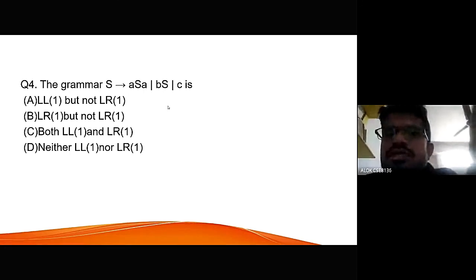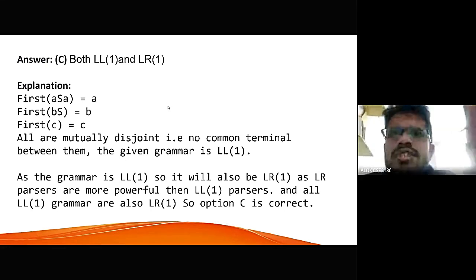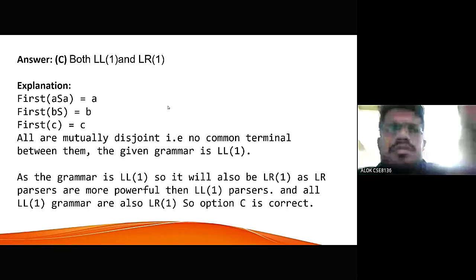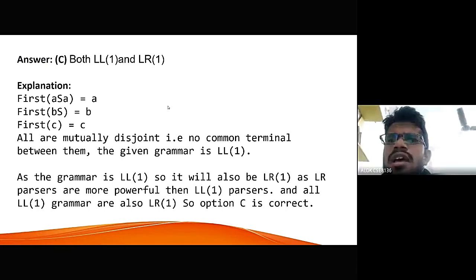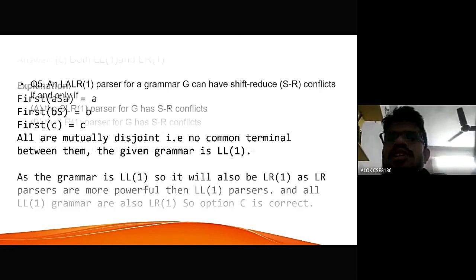We are given the four options. Now, we come to find first of the given productions we have to find out. First of B S is B, first of C is C. When we draw the parsing table corresponding to this grammar, we don't get any conflicts. We can say that it is an LL1 parser and as the grammar is LL1 so it will also be LR1 as LR parsers are more powerful than LL1 parsers and all LL1 grammar are also LR1. So option C is correct, that is both LL1 and LR1.